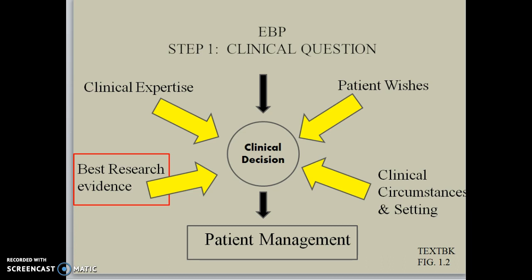If we consider three of those corners, they are fairly static in nature. The patient wishes are one of the most important considerations, which we get through narrative reasoning and find out from them what they really want to have done. The clinical circumstances and setting is something that's also fairly finite — we definitely work within a clinical scenario and within the challenges and attributes that each setting can provide. And the clinical expertise is an ongoing development of our own clinical skill sets. Given the fact that those three tiers are something fairly defined already, the one area we can expand or not expand depending upon our choice is the use of the best research evidence available.